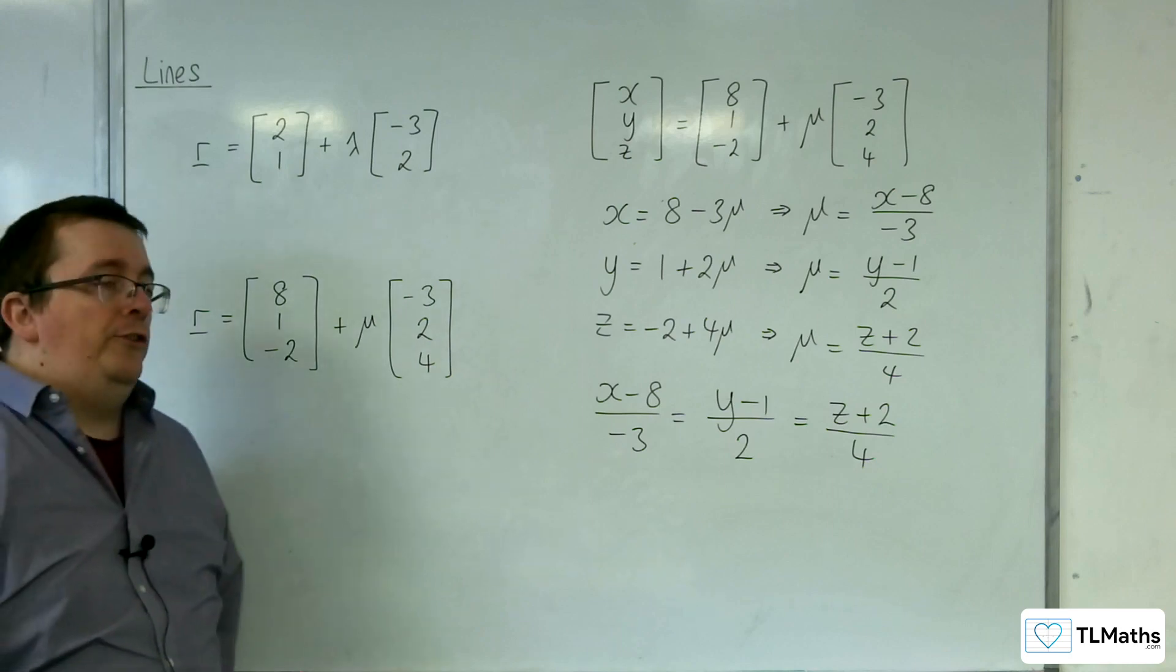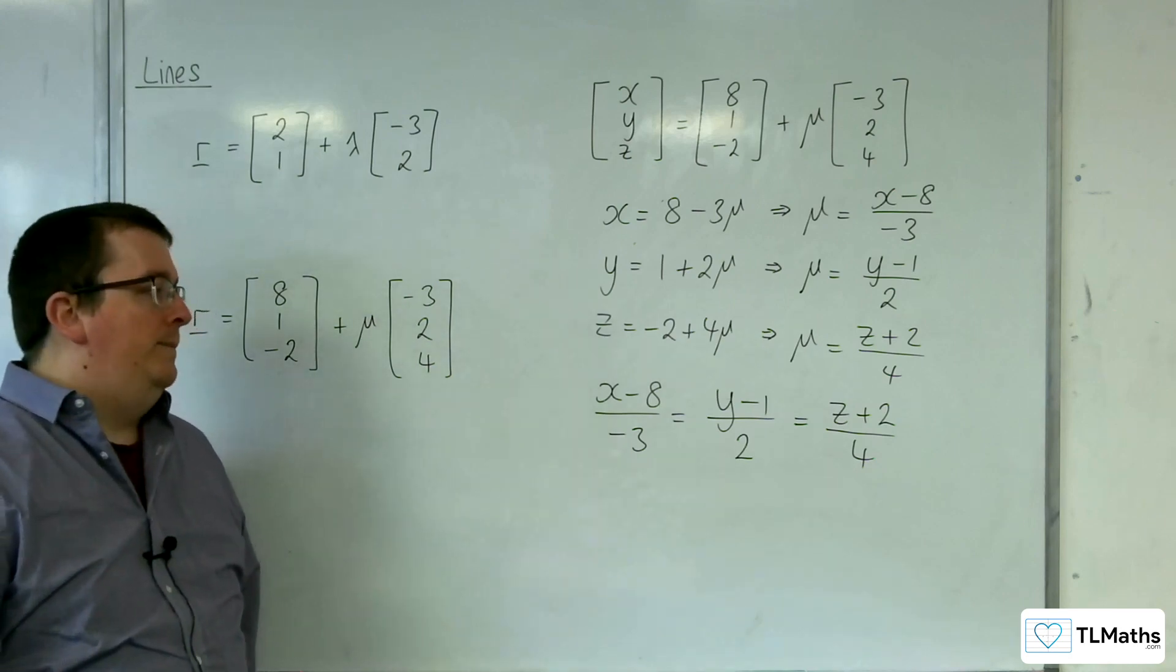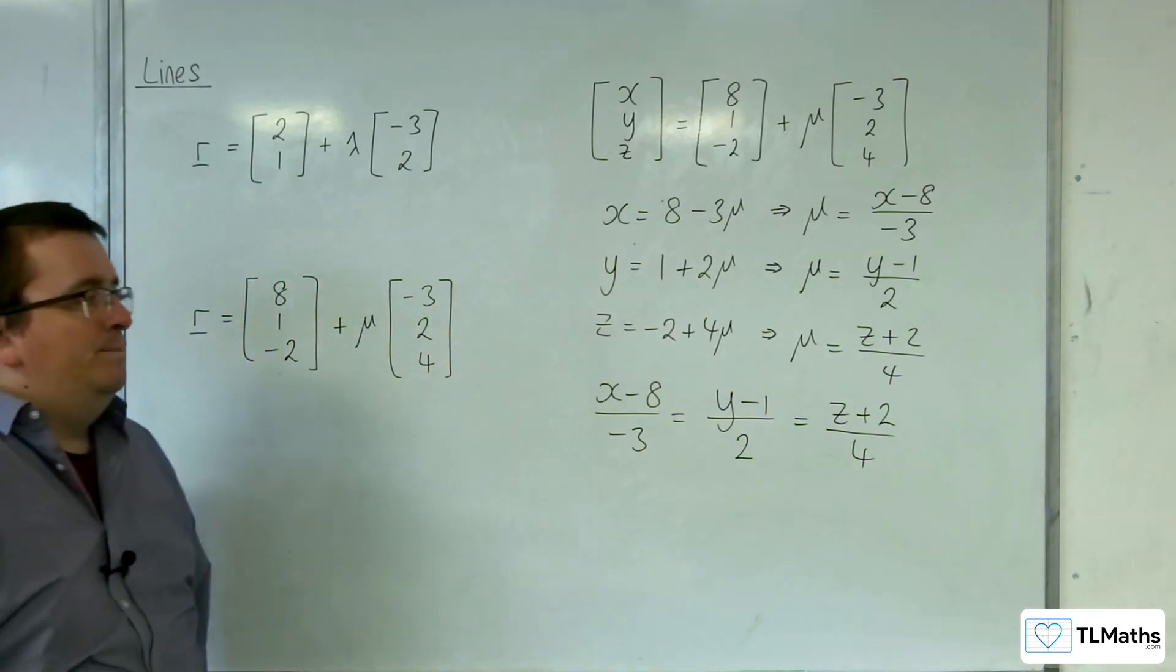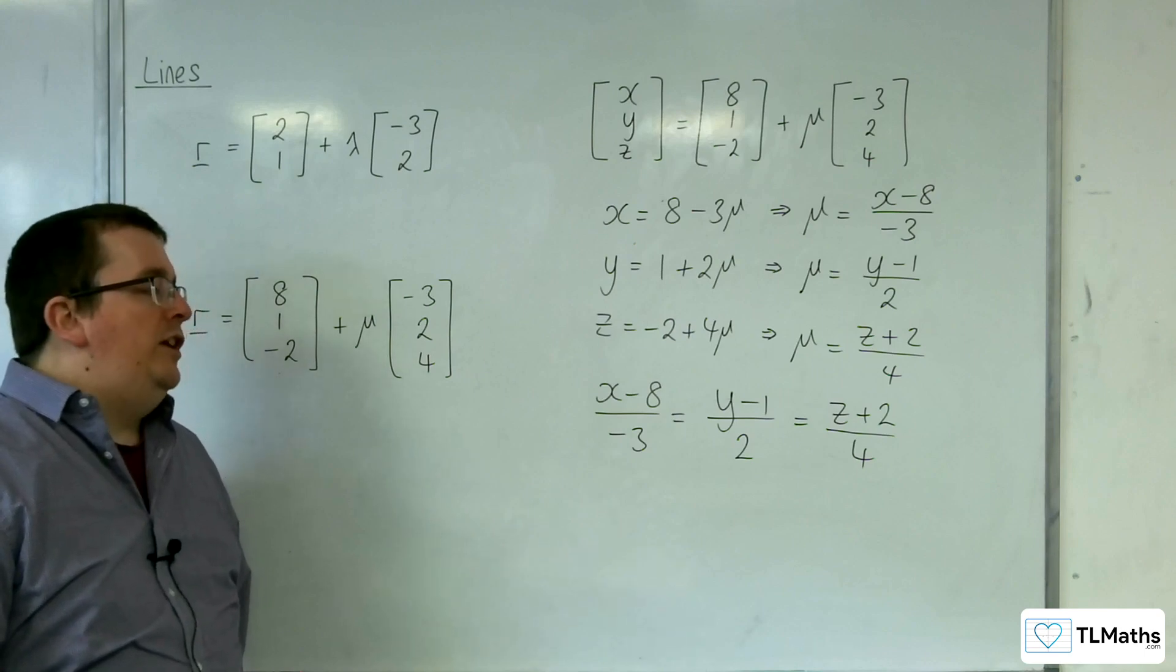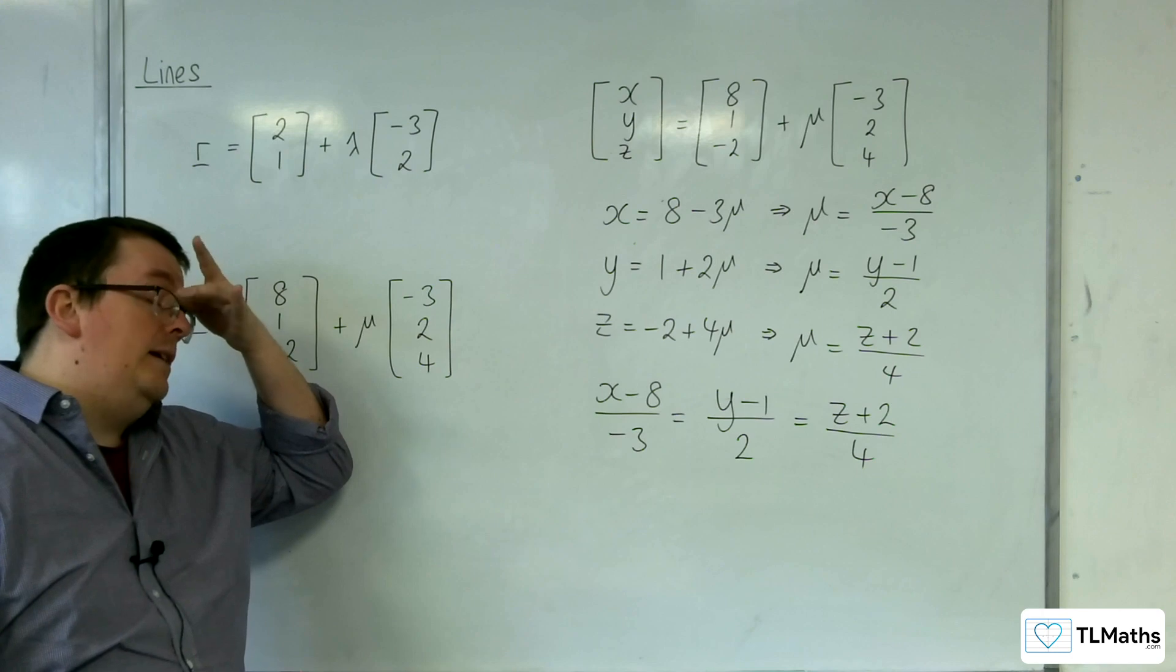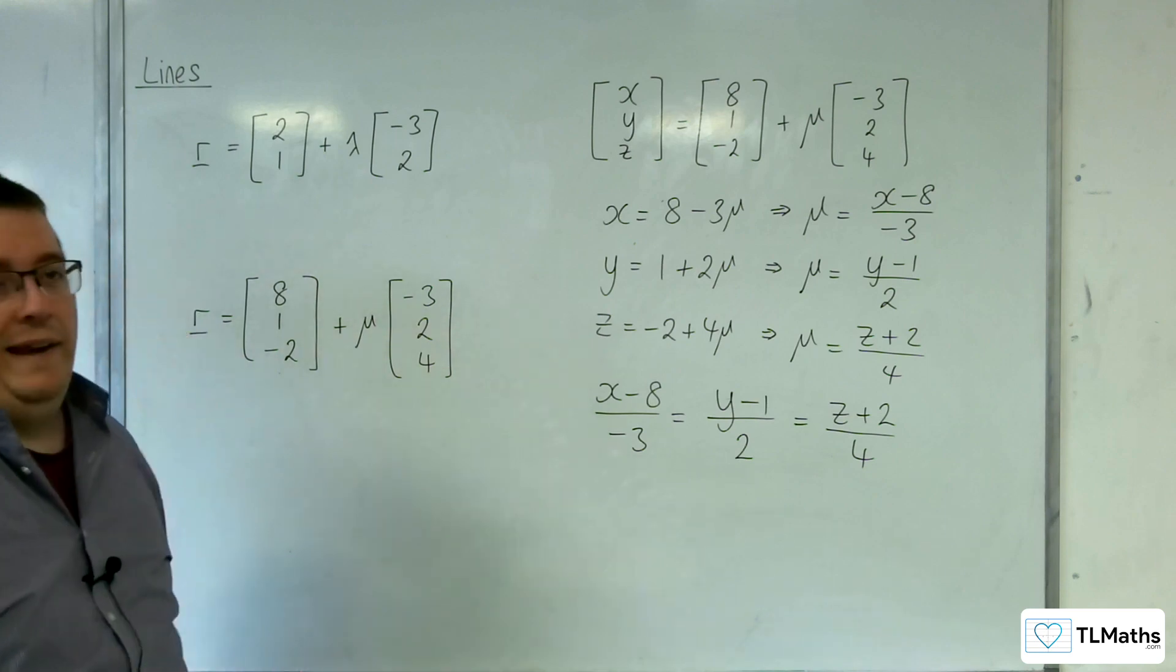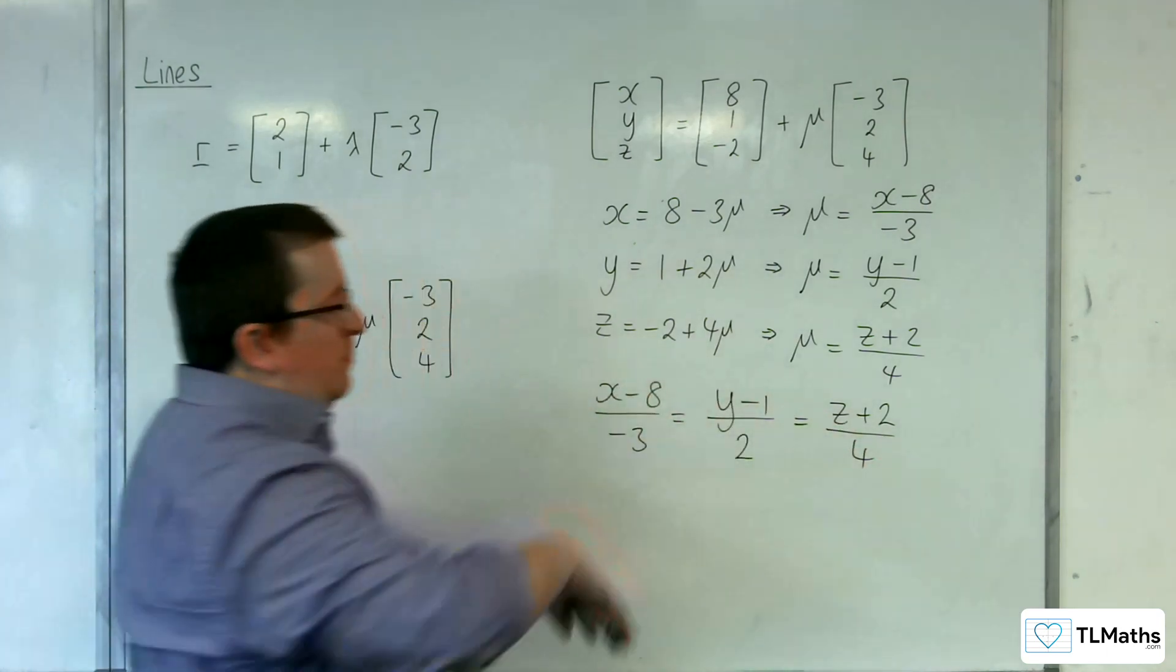As you can see, because it's got two equal signs involved, it's quite cumbersome. Now, you could multiply through by the denominators and get rid of those. It's not really going to do you many favours. This is usually the structure that we would expect to see for Cartesian equation in 3D. This is kind of how it's left. Because otherwise, you're just muddling it around and making it more complicated than it needs to be. Because it's already fairly cumbersome.